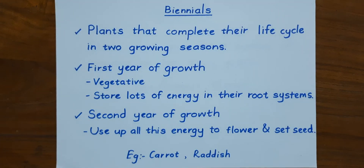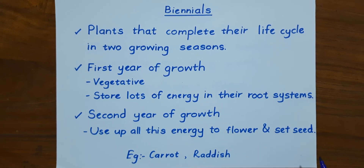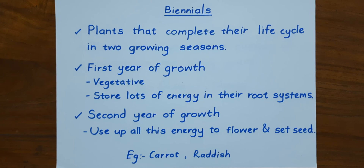The next type is biennials. Biennials are the plants that complete their life cycle in two growing seasons. In the first year of growth, they are vegetative and store lots of energy in their root systems. In the second year of growth, they use up all this energy to flower and set seed. Set seed means when the flower has completed pollination, it starts growing seeds. Examples of biennials are carrot and radish.